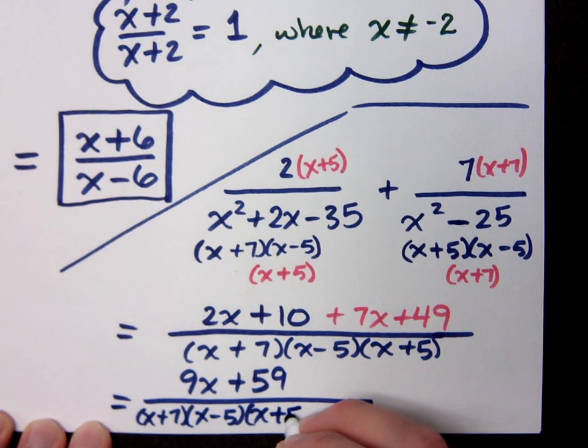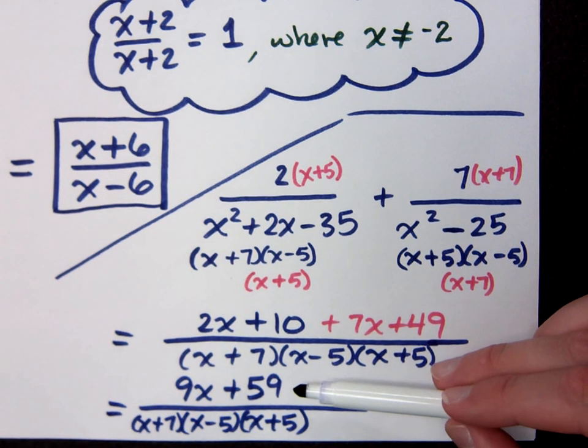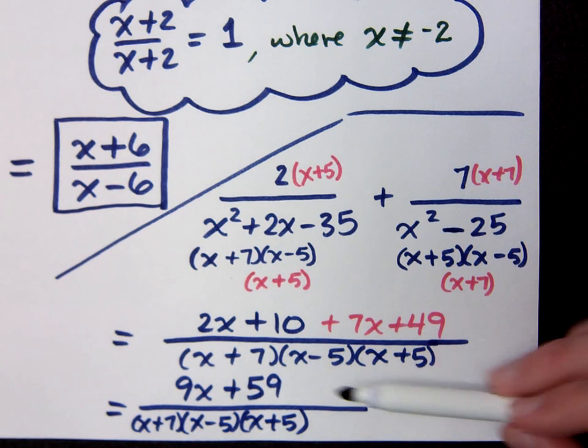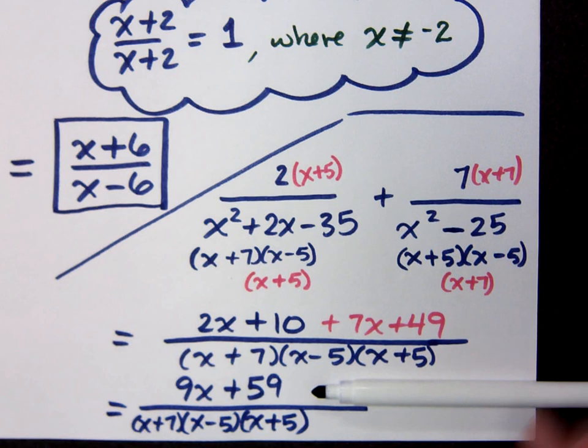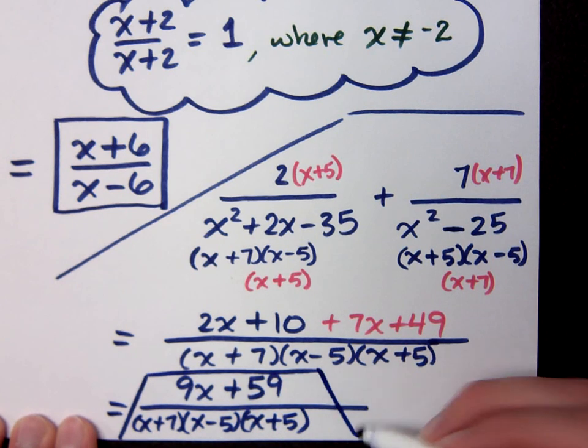Now in the numerator, you would like to see, you know, look and see, does this guy factor? Is there any more simplification that can be done? But in this problem, this numerator is prime. 59 is prime. It has nothing in common with the 9. And so this guy will be our final answer.